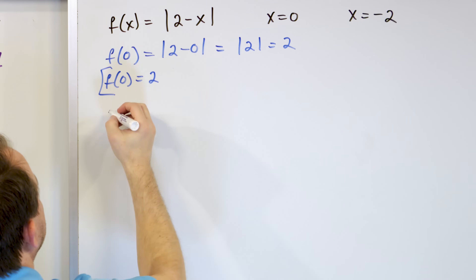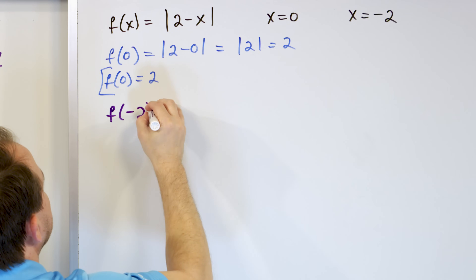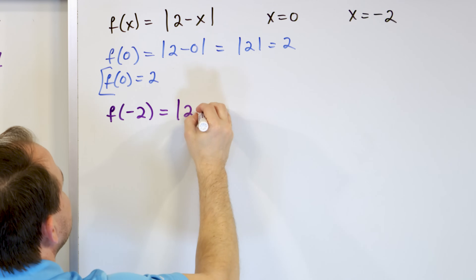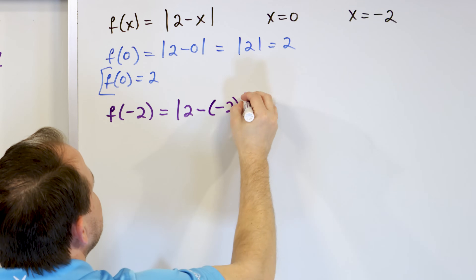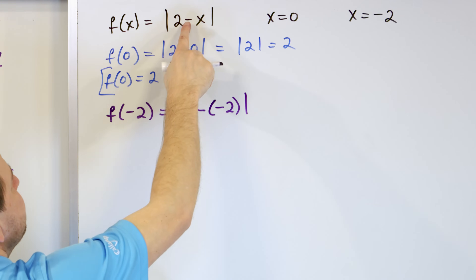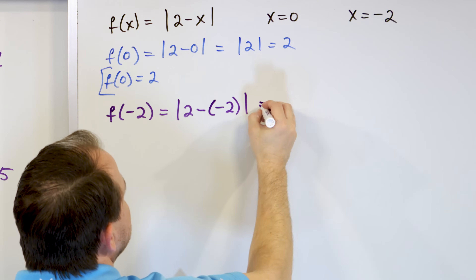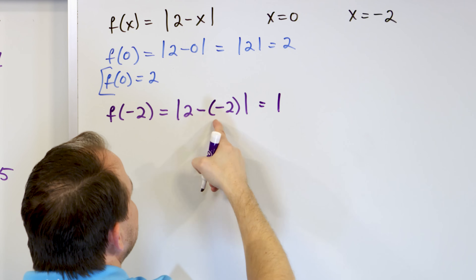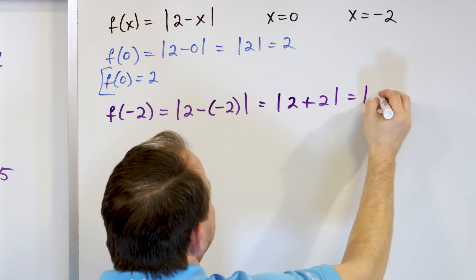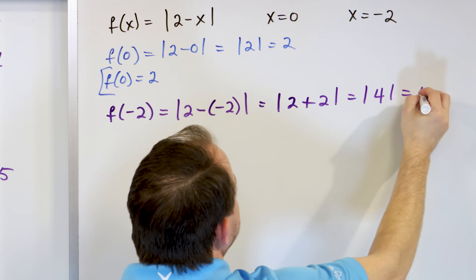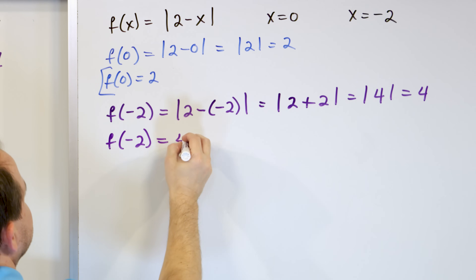Then we evaluate at x equals negative 2: f of negative 2 is the absolute value of 2 minus negative 2. Be careful — x is negative so wrap it in parentheses to avoid mistakes. You have 2 minus negative 2, and the negative times negative gives you positive, so it's the absolute value of 4, which equals 4. So f of negative 2 is 4.